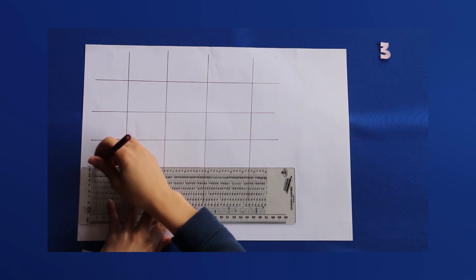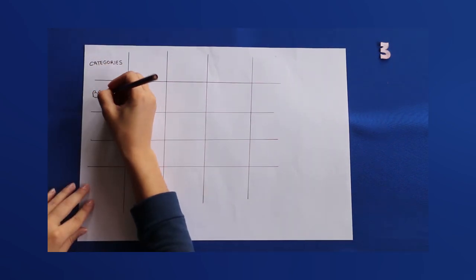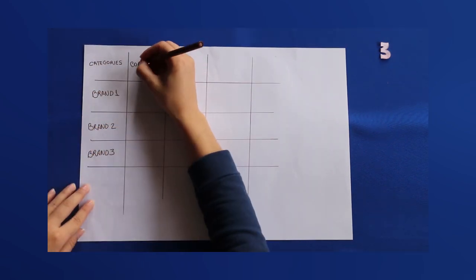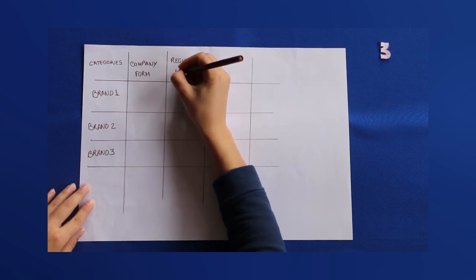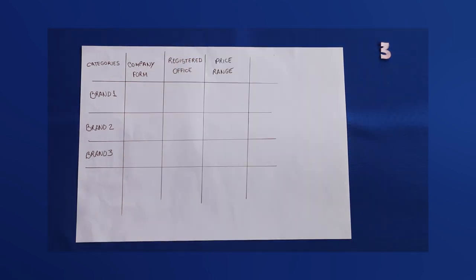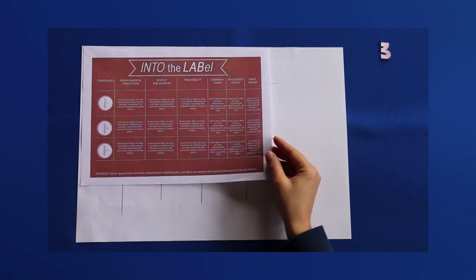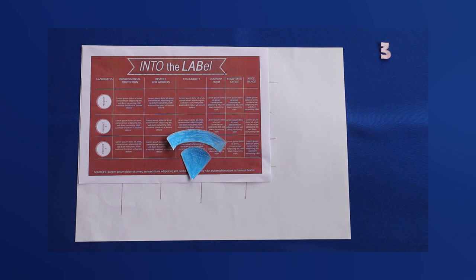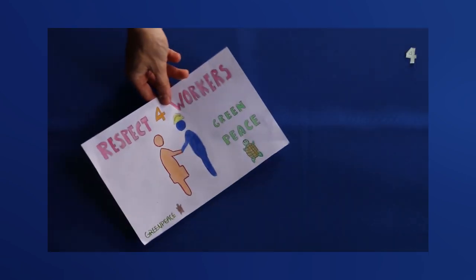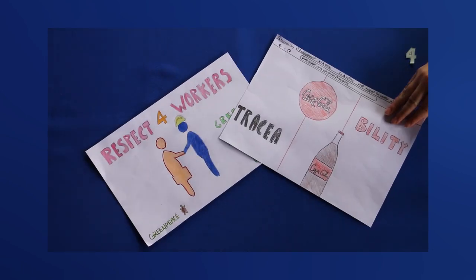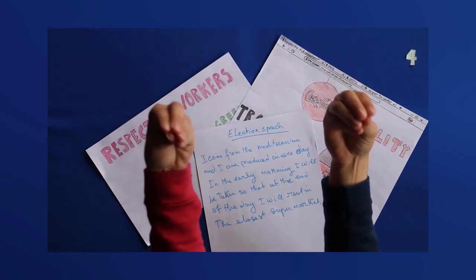Inside each category, place the brands of the candidates. These instructions should be written in a brochure and distributed during the event. You can also place them online to facilitate the circulation of the information. Step 4: Prepare an election speech for each candidate that you will interpret.